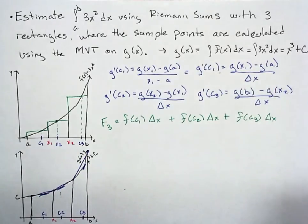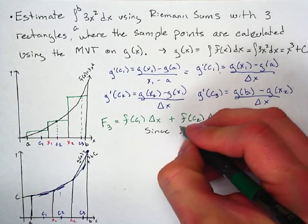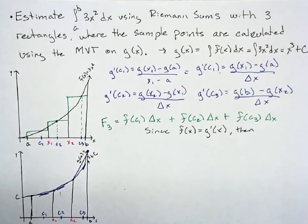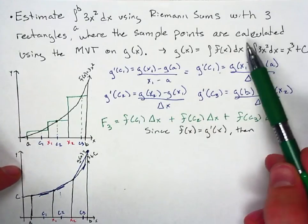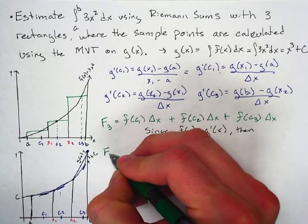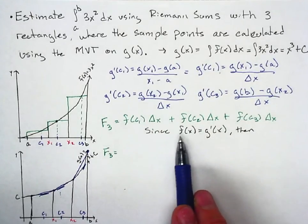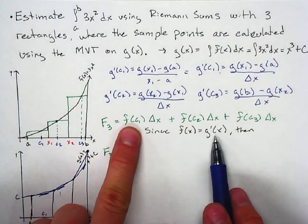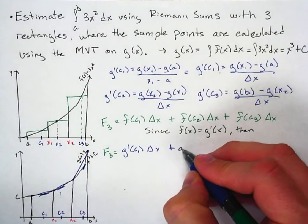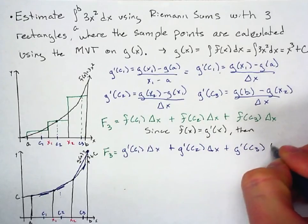Since f of x equals g prime of x, we can substitute. Because of the relationship between f and g based on our integral, f(c₁) can be written as g prime of c sub 1, f(c₂) as g prime of c sub 2, and f(c₃) as g prime of c sub 3. So the Riemann sum becomes: g′(c₁)·Δx + g′(c₂)·Δx + g′(c₃)·Δx.